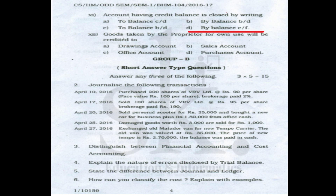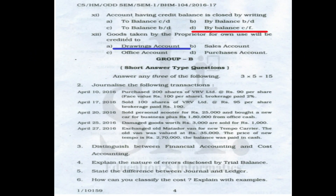Question number eleven: an account having a credit balance is closed by writing 'by balance c/f' (carried forward). The correct option is D. Question number twelve: goods taken by the proprietor for own use will be credited to drawings, as it is a withdrawal for personal purpose. The correct option is A. This concludes the 2016 paper.